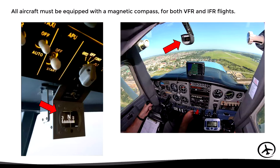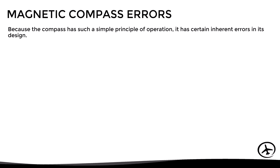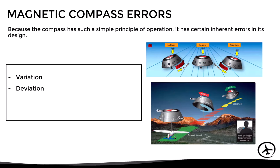As we said previously, the compass indication isn't always completely correct, since the compass has such a simple principle of operation, it has certain inherent errors in its design. Here we can mention the errors caused due to magnetic variation, compass deviation, and magnetic dip, which in turn can be divided into acceleration error and turning error. But we will deal with these errors in detail in the next videos.